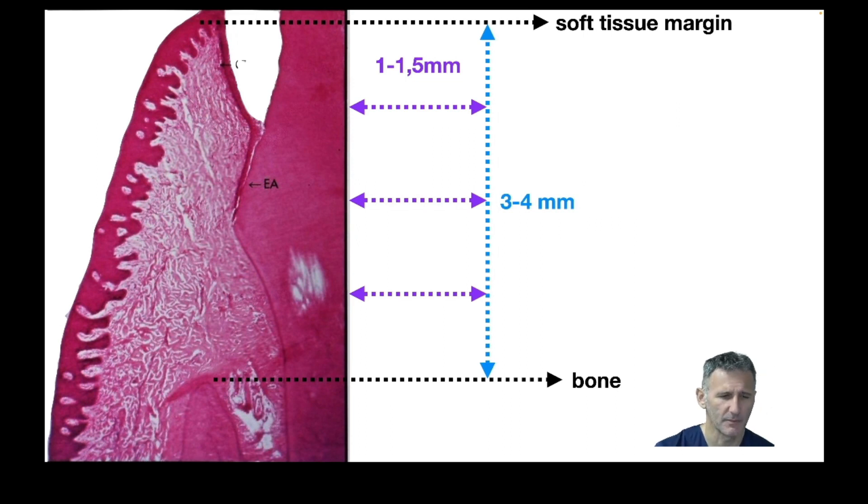When we are doing the vertical preparation, there is something that we have to acknowledge. If this is all the height of the soft tissues and this is the soft tissue margin, what is the problem?